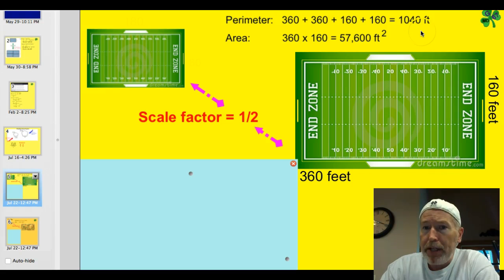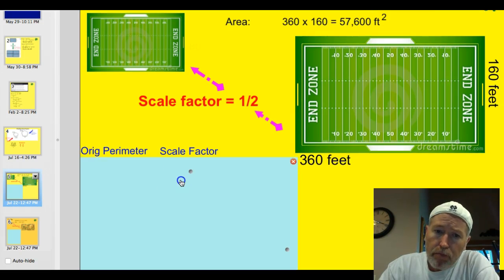We can determine the area by multiplying these two together, just like a rectangle. And it is 360 times 160, which is 57,600 feet squared. So now we're going to use those measurements to determine the perimeter and the area of the smaller one.